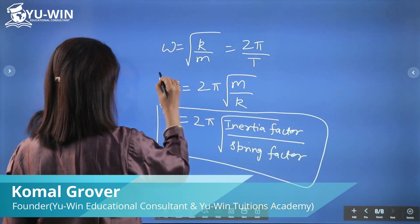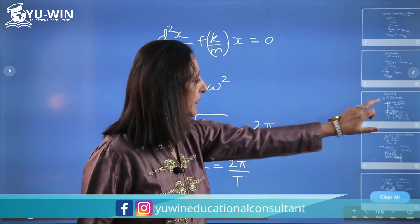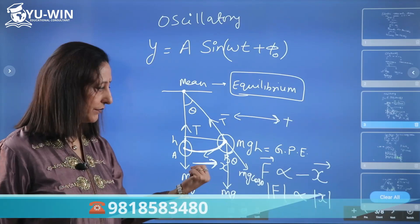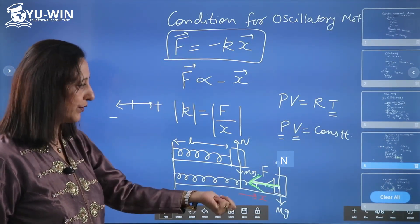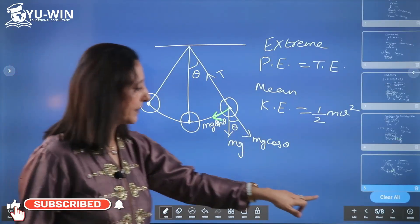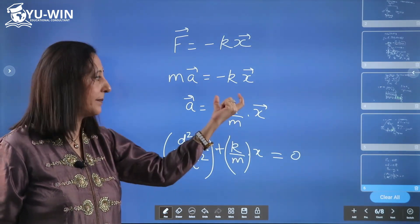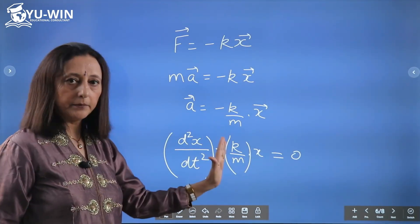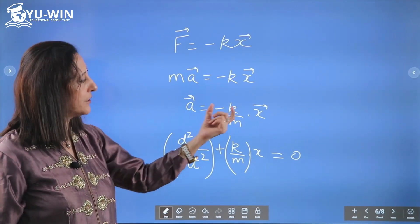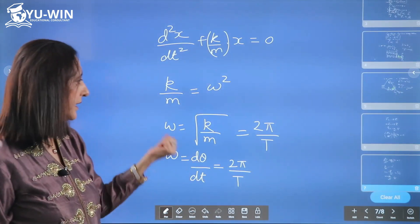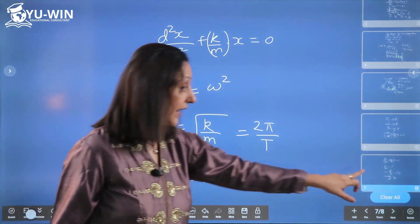So to summarize the approach: first, list all forces on the system. Identify the force directed towards mean position — the unbalanced force that behaves like restoring force — which should be of the type F = −kx. Write F = ma, giving m·a = −kx, so a = −(k/m)x. The coefficient of x gives k/m = ω². From ω, write ω = 2π/T and hence get the time period. The exact coefficient will depend on the origin of restoring force — whether it's mg sin θ or spring elasticity or gas pressure.